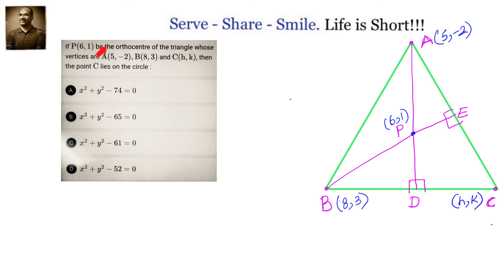If P(6,1) be the orthocenter of the triangle whose vertices are A(5,-2), B(8,3), and C(H,K), then point C lies on the circle.